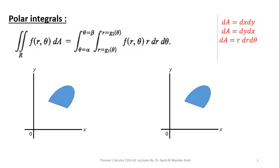This is the general form of a polar integral: double integral over region R of f(r, theta) dA, where R is the region of integration and f(r, theta) is a function of r and theta. dA is a small area element of the region. In Cartesian integrals, we take dA equal to dx dy or dy dx, but in polar coordinates we always take dA equal to r dr d-theta.